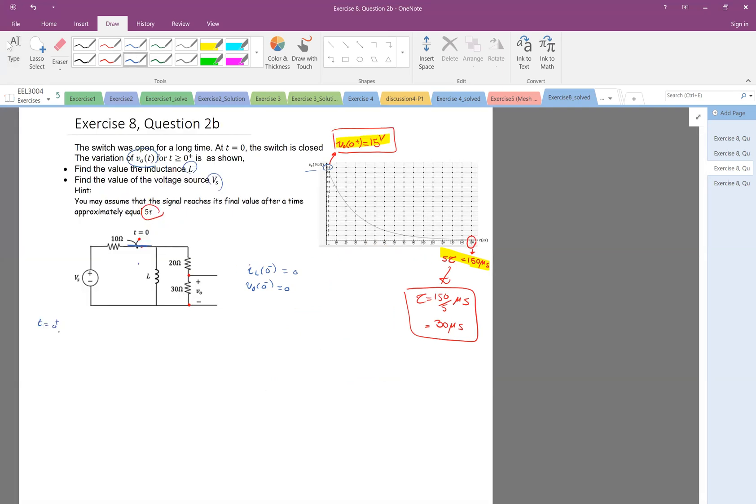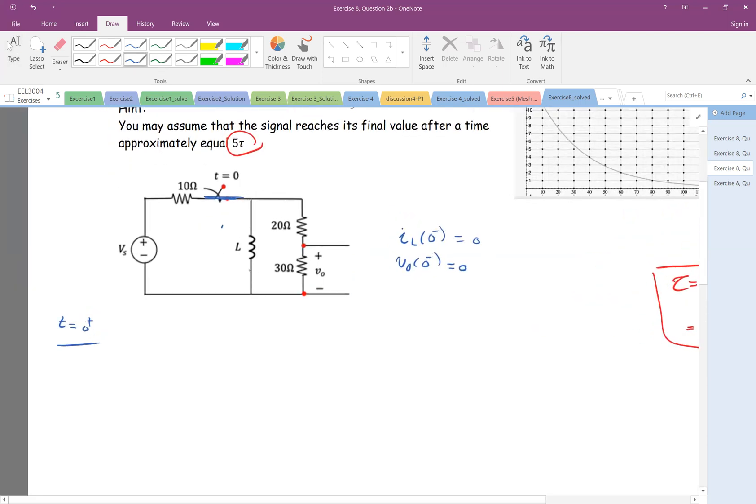But let's also go back to the zero plus and let's find a formula for that, the V0 at zero plus. So what I know is that the current here, the IL at zero minus is zero, so IL at zero plus is also zero.